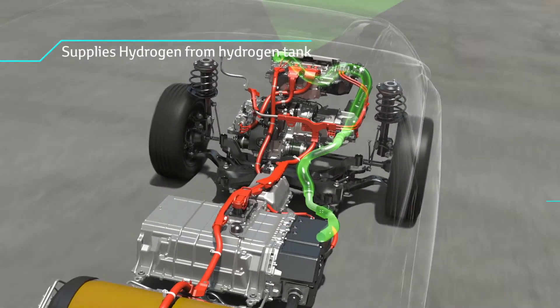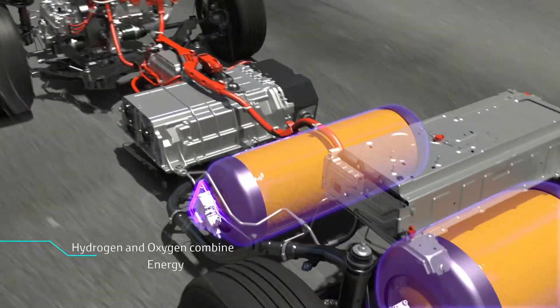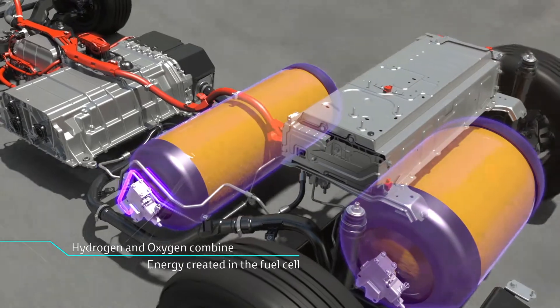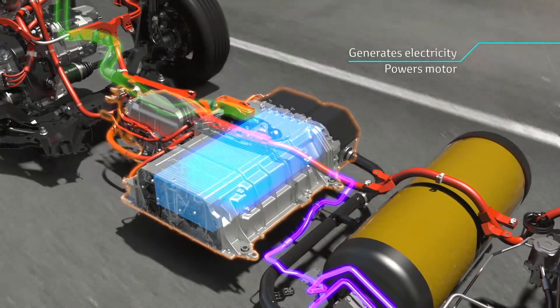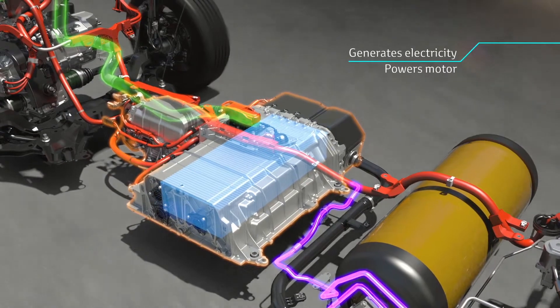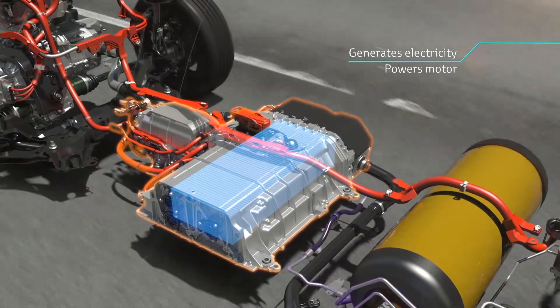Hydrogen and oxygen create electricity which powers the motor without burning hydrogen. The only emission while driving is water and no carbon dioxide is emitted. The motor provides exceptionally smooth acceleration making the FCV fun to drive.